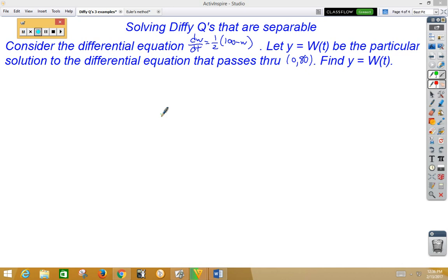Let's go ahead and do one more differential equation. This one is not going to be in terms of y and x, but in w and t. So we have dw/dt is equal to 1/2(100-w) through (0,80). And this time, y is defined as w(t).